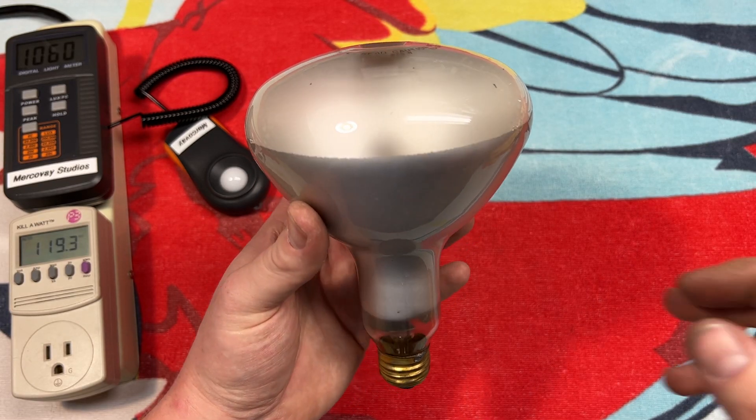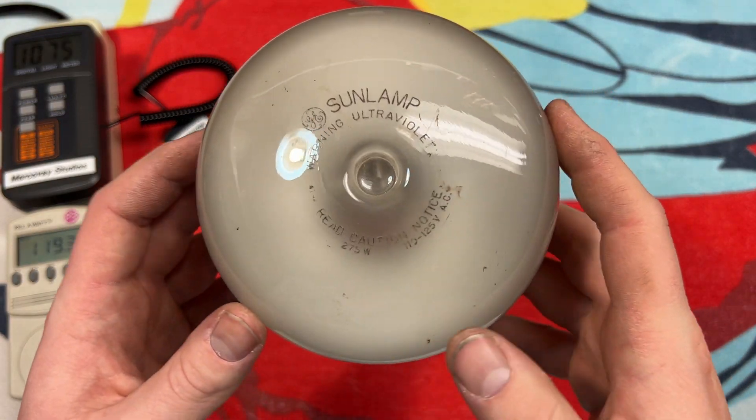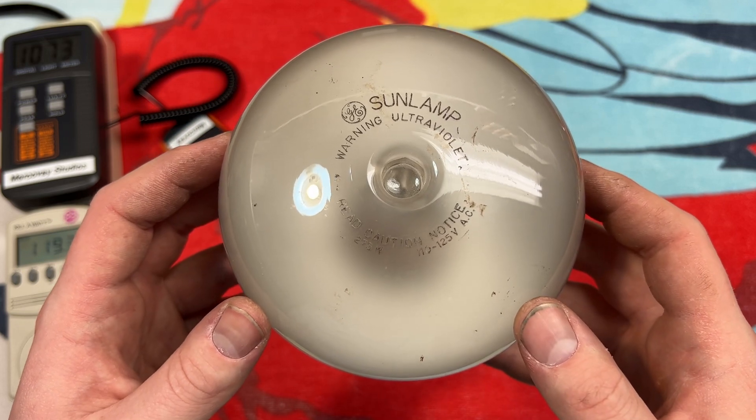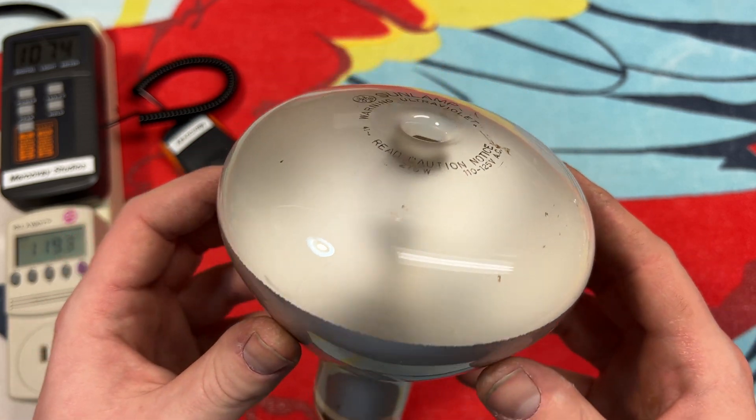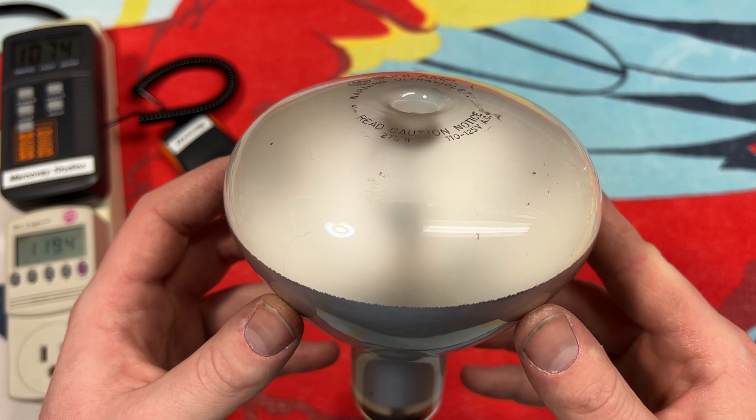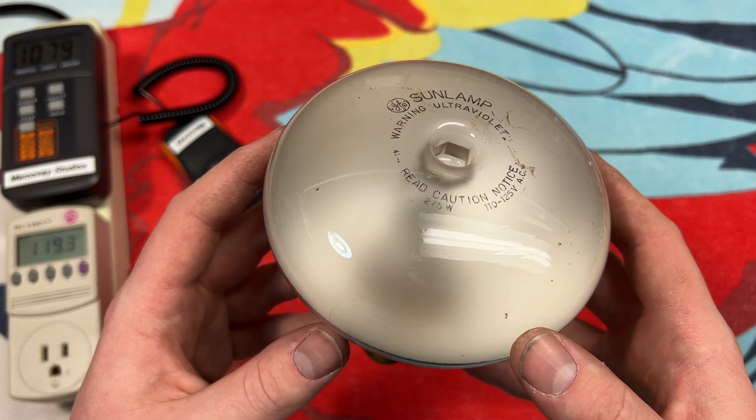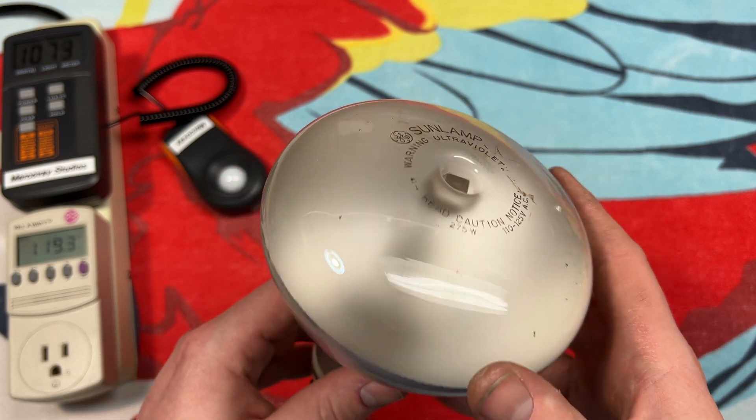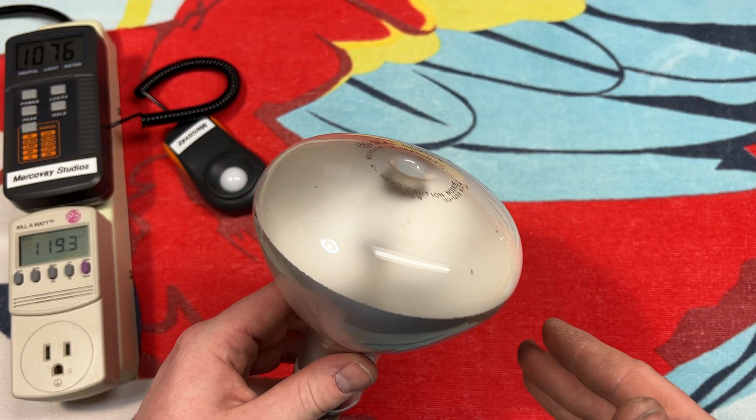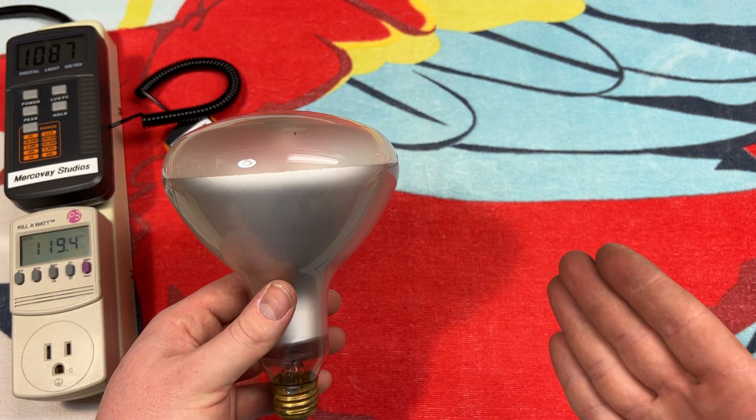Hello everybody, today we're going to be taking a look at this GE 275 watt ultraviolet sun lamp. This is essentially a self-ballasted mercury vapor bulb, but the glass allows the UV radiation from the mercury vapor arc tube to pass on through and give you a suntan, for example.